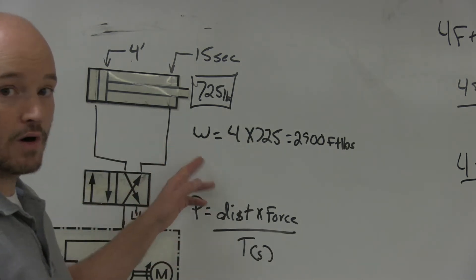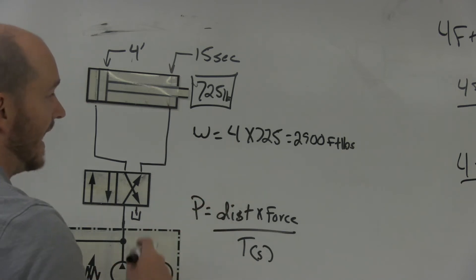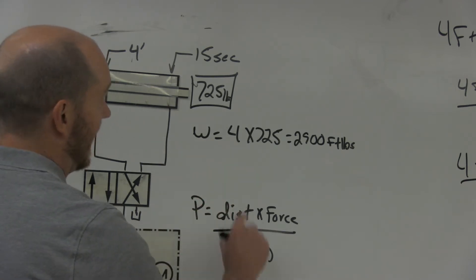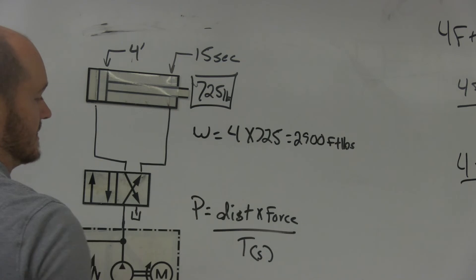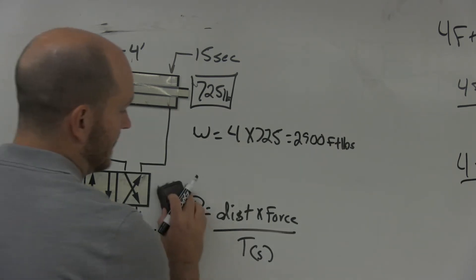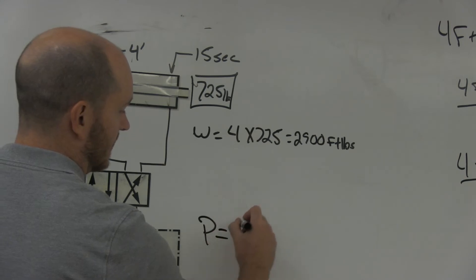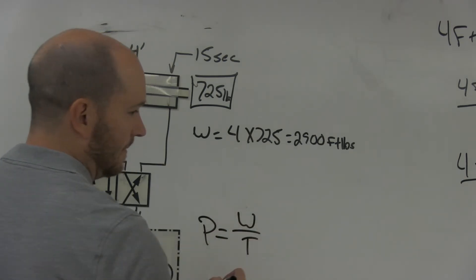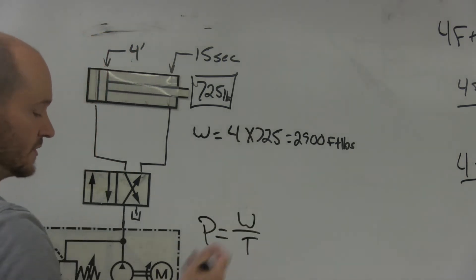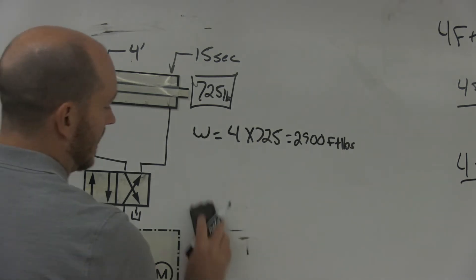I would get my work value and then divide that by however many seconds it takes, in this case 15 seconds. Another way to look at this formula is just work over time, since work is force times distance.